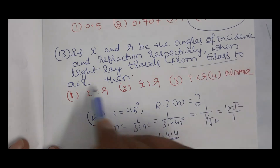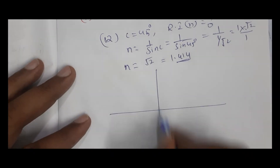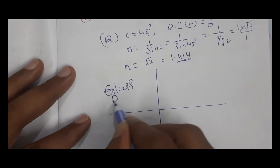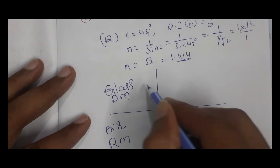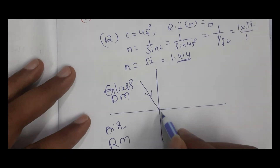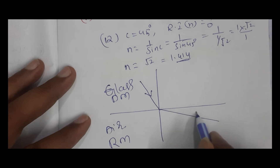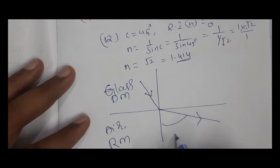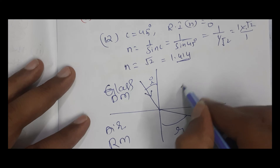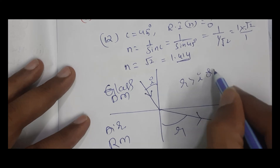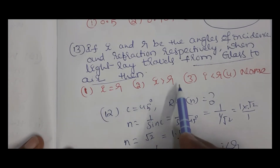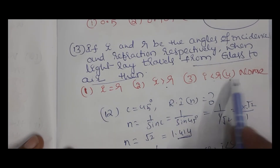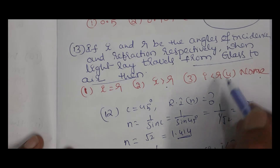Question 13 continued: when light travels from glass to air — glass is the denser medium, air is the rarer medium. When traveling from denser to rarer medium, the refracted ray bends away from the normal, so the angle of refraction r is greater than angle of incidence i. That is, i is less than r.